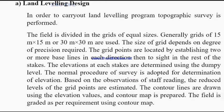The grids are located by establishing two or more base lines in each direction. The elevation at each grid point is determined using the dumpy level. The normal procedure of survey is adopted for determination of elevation based on observation of staff readings. The reduced level of grid points are estimated, contour lines are drawn using elevation values, and a contour map is prepared for the field.